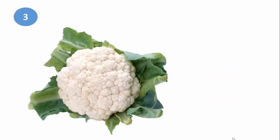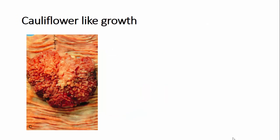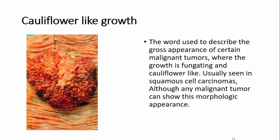The third one is the cauliflower. We always refer to any tumor with a cauliflower-like growth. This word is used to describe the gross appearance of most malignant tumors where the growth is fungating, usually seen in squamous cell carcinomas, although any malignant tumor can show this morphologic appearance. In this case, you can see a cauliflower-like growth seen probably in the colon.